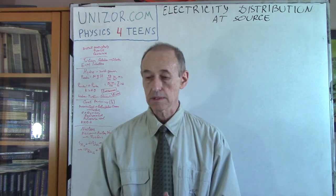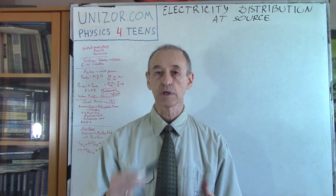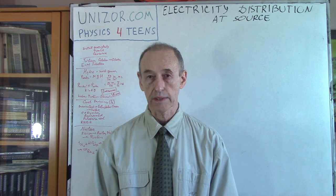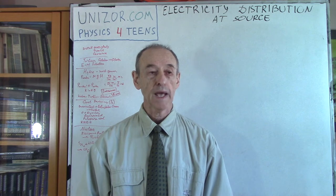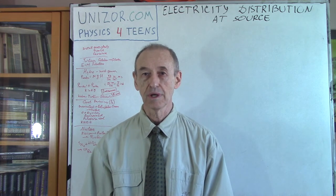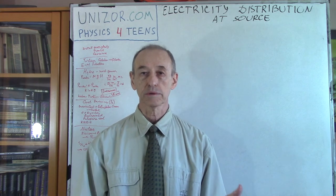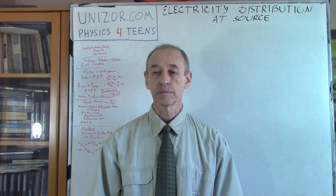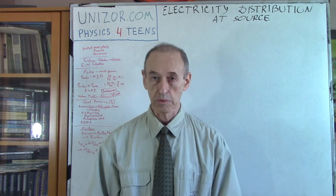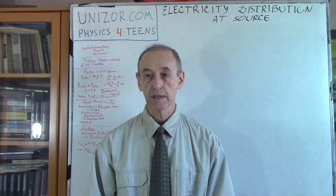The main way to produce electricity we discussed before was converting rotational energy into electric energy using electromagnetic induction principles. So we need to talk about how to produce that rotation for use in an electric generator. In practice there are many ways, but we'll discuss three most interesting and commonly used: hydroelectric power plants, fossil fuel burning power plants, and nuclear power plants.